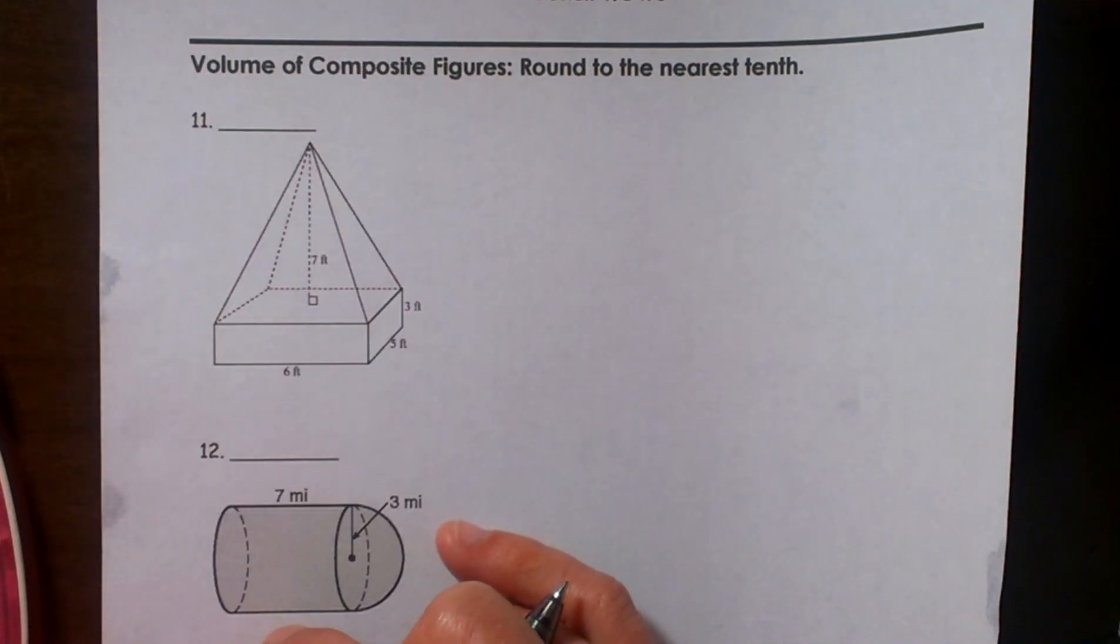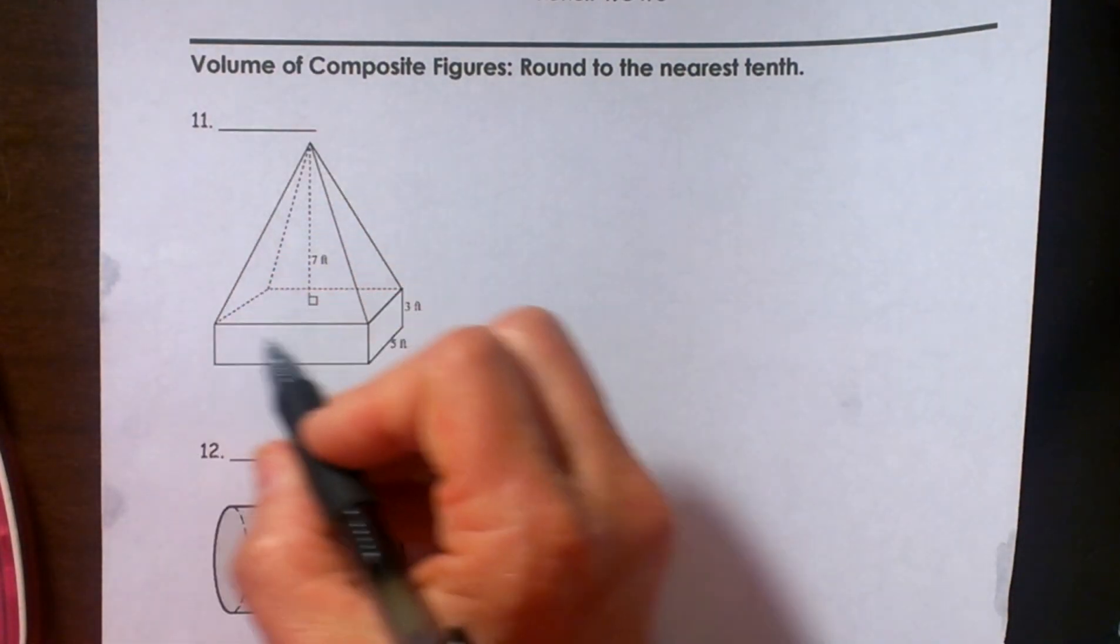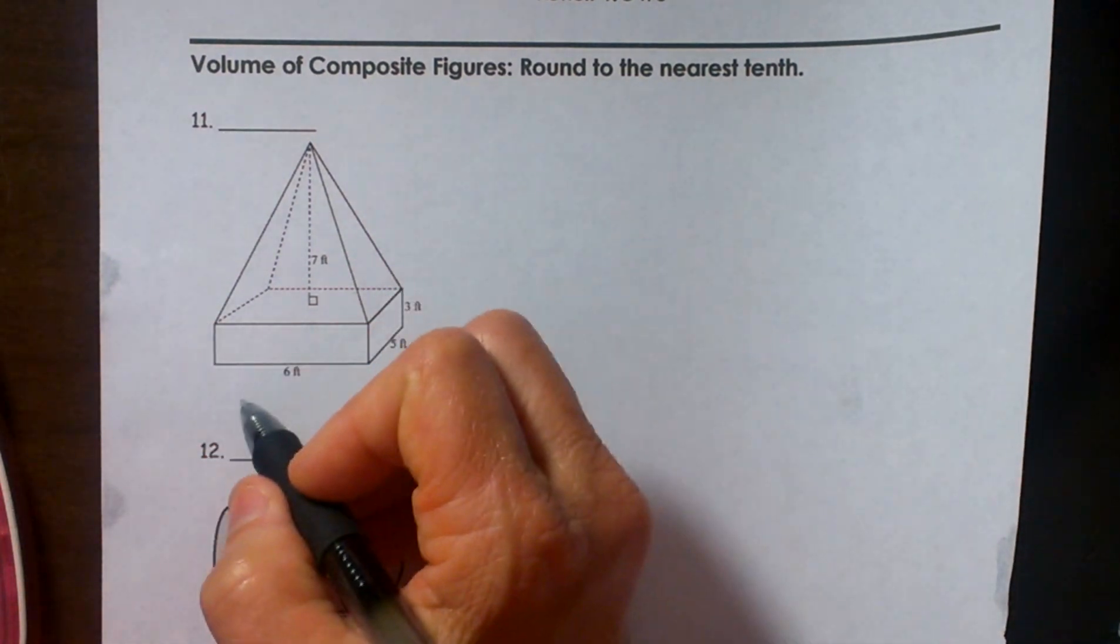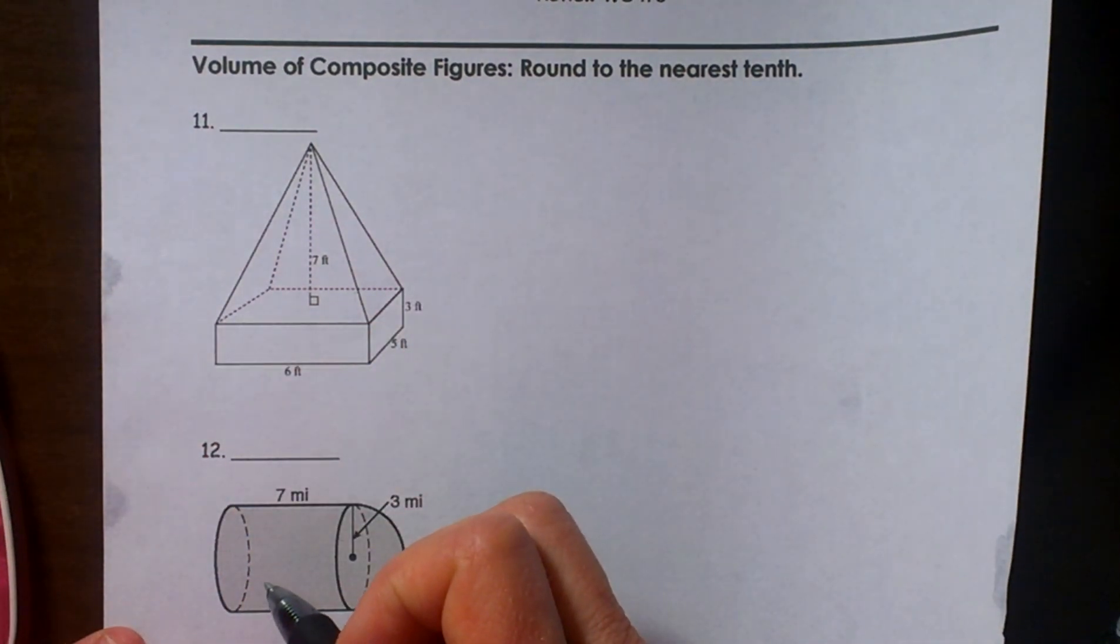So let's look at what we have here. First we have a pyramid on top of a rectangular prism. So let's do the easy one first.